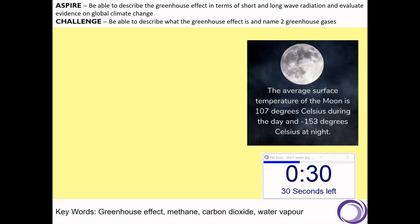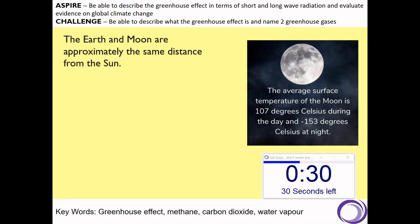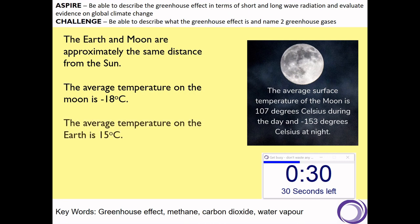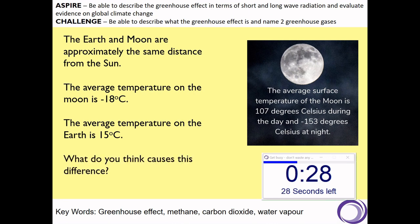Let's start with some interesting information. The average surface temperature of the Moon is 107 degrees Celsius during the day and minus 153 degrees Celsius at night. But the Earth and the Moon are approximately the same distance from the Sun. The average temperature on the Moon is minus 18 degrees C whereas the average temperature on Earth is 15 degrees C. What do you think causes that difference?